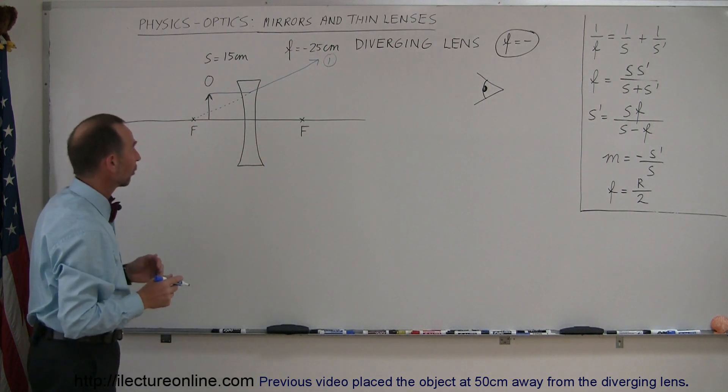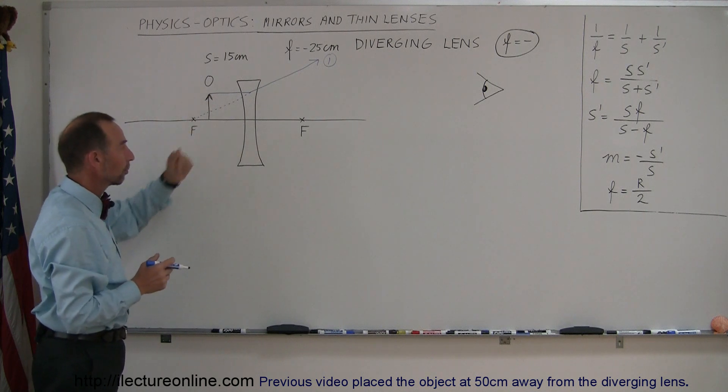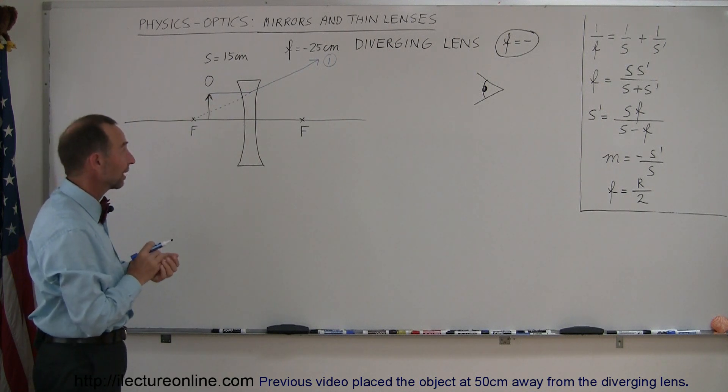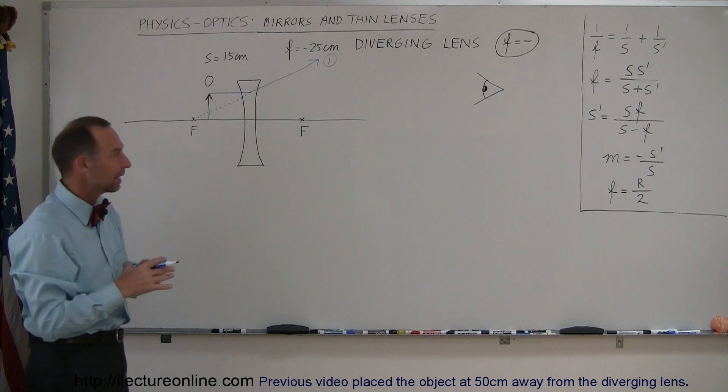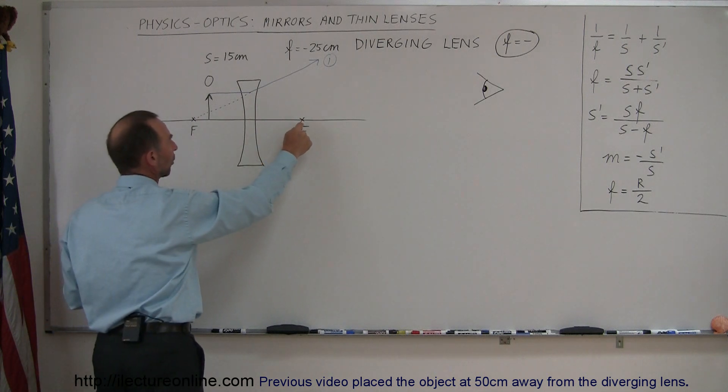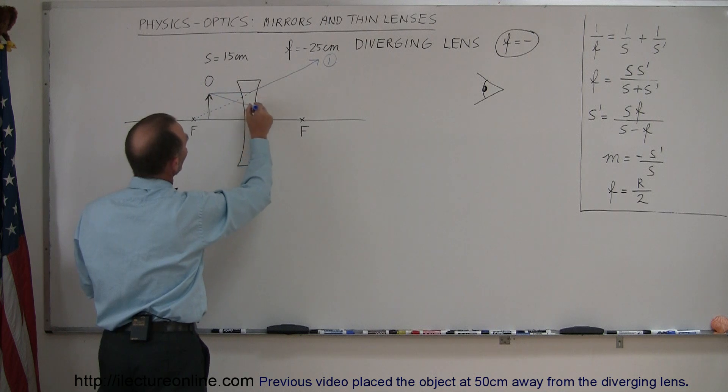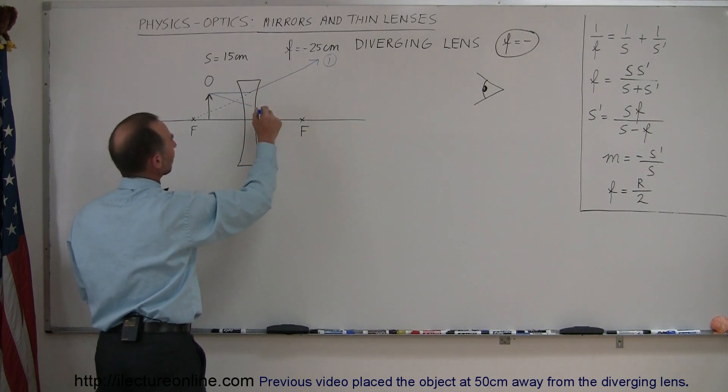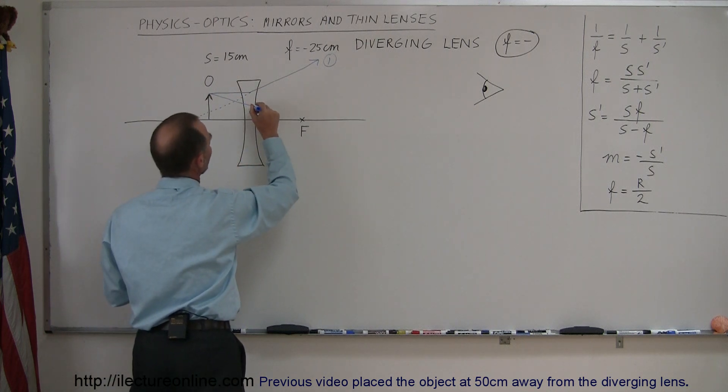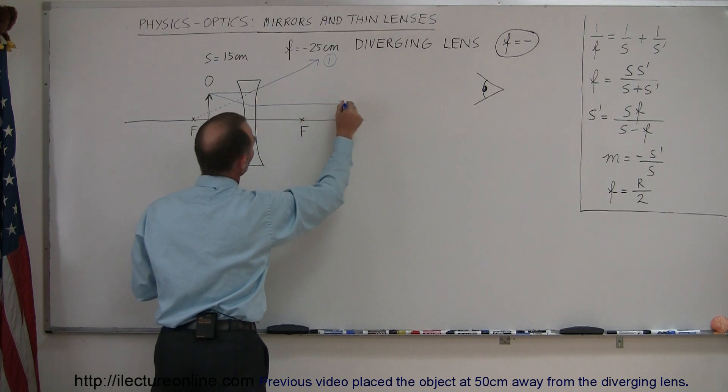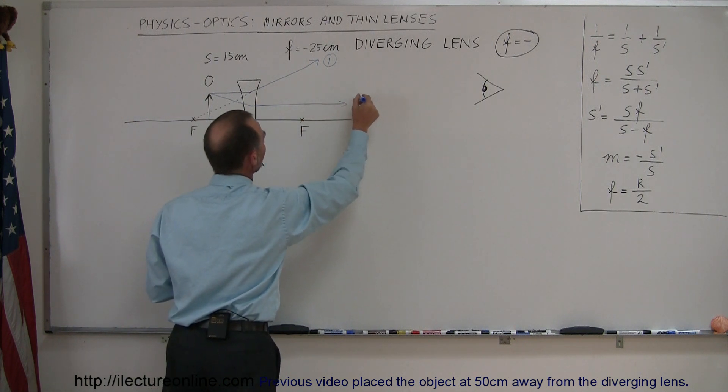Ray number two, just like before, we try to draw it from the object to the focal point. Now, since this is a diverging lens, or sometimes also called a negative lens, we want to take the focal point on the other side of the lens, draw a ray directly to that focal point, but before we get there, the lens will diverge the ray and continue on parallel to the normal, so that's ray number two.